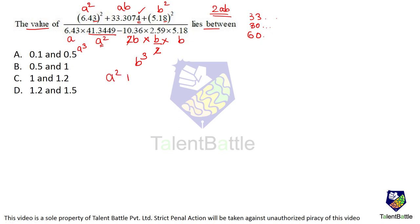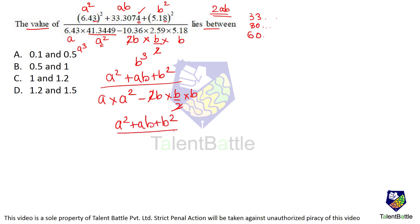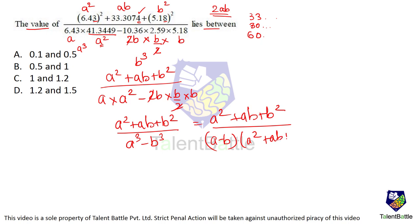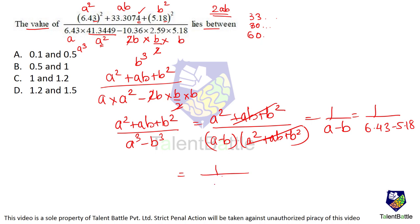So what we can write is: (A² + AB + B²) divided by A × (A² − 2B) × (B/2) × B. This gets cancelled out and what we get is (A² + AB + B²) divided by (A³ − B³). Now we know the formula for A³ − B³. Substituting: A³ − B³ = (A − B)(A² + AB + B²). So this bracket gets cancelled and what we have is 1 upon (A − B), which comes out to be 1 upon (6.43 − 5.18). On subtraction, we get 1.25.